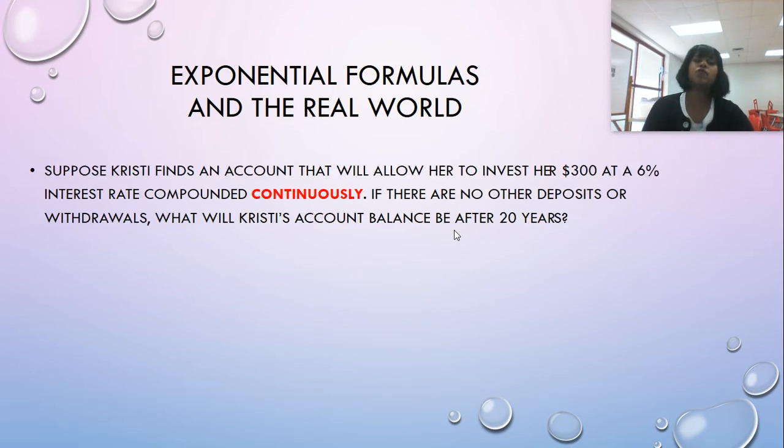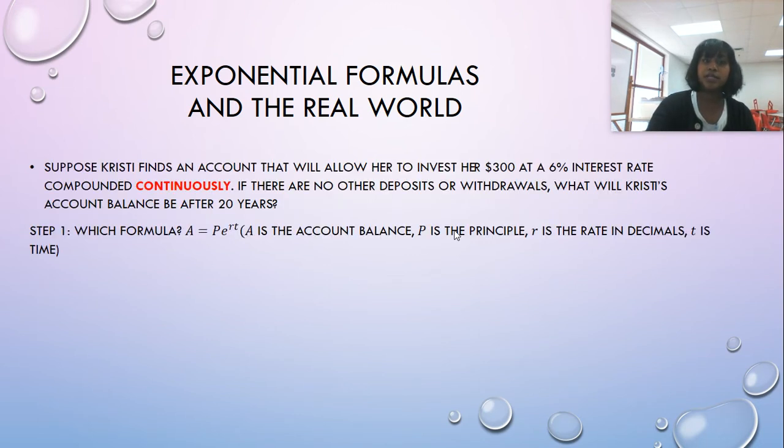And finally, we have this fourth question. Suppose Christy finds an account that will allow her to invest her $300 at 6% compounded continuously. So that means it's not getting compounded twice a year, 12 times a year, 365 times a year. It's getting compounded infinitely, constantly compounded. And so you might predict, is this going to be her best option? Let's find out.